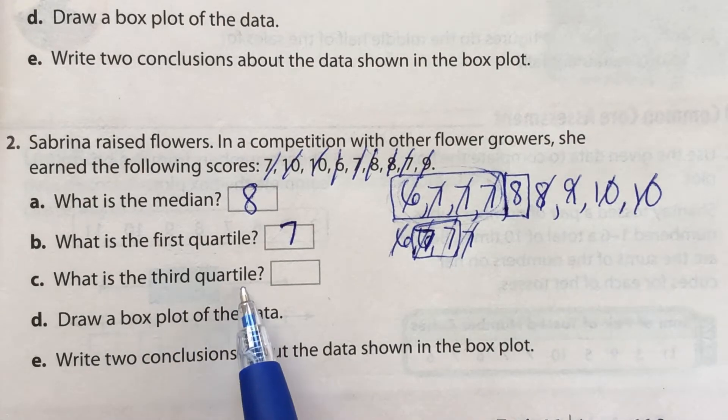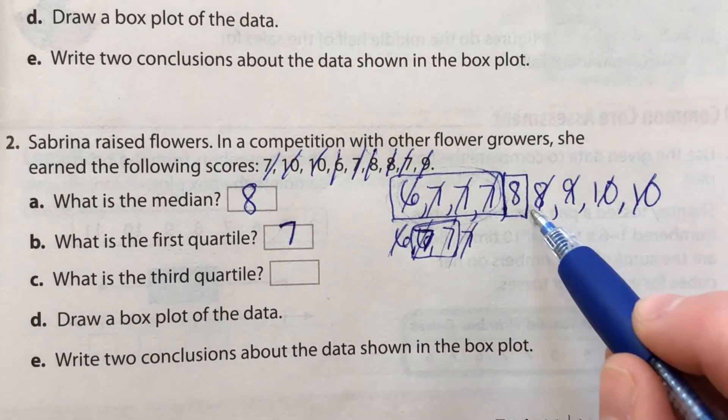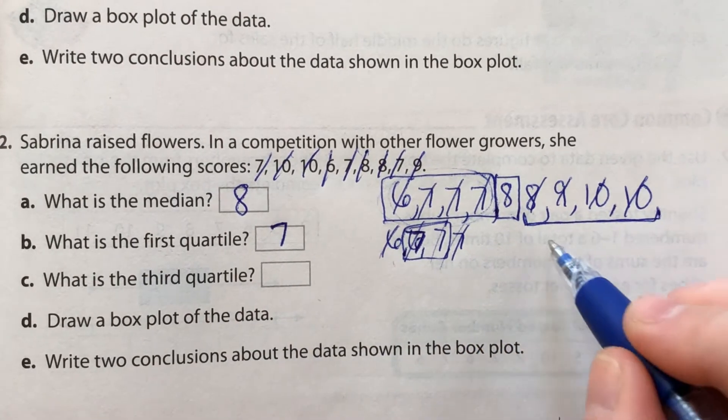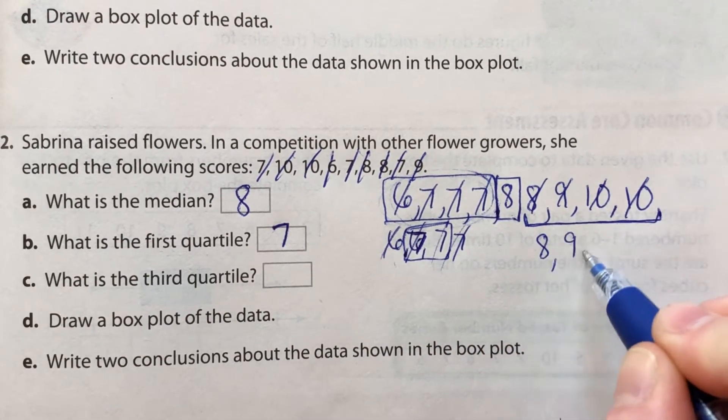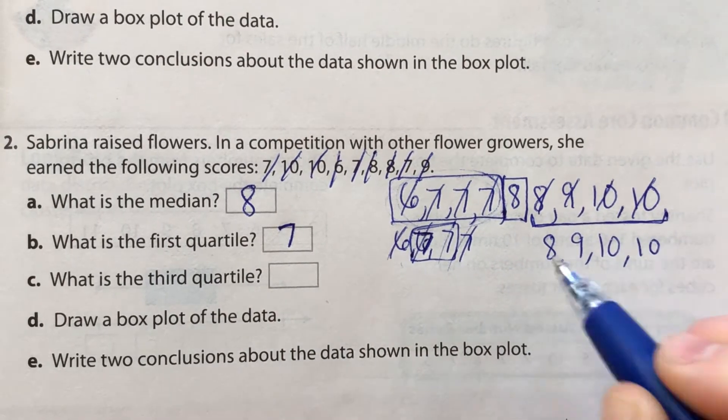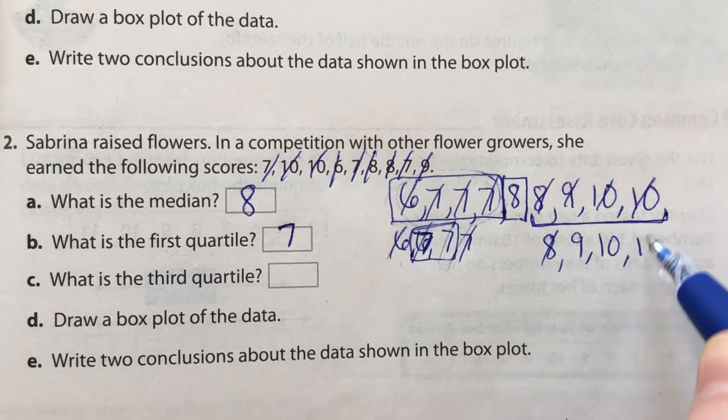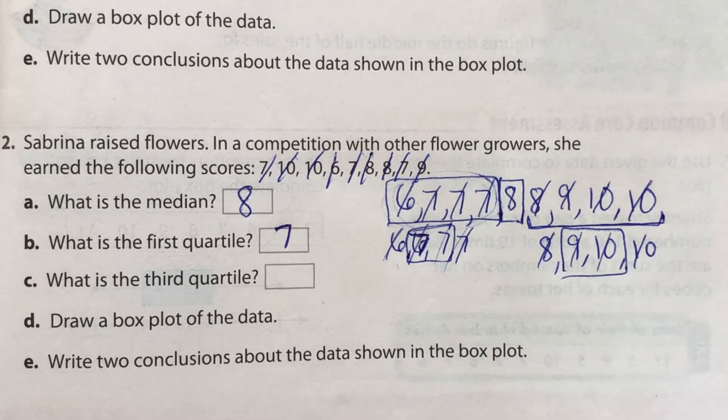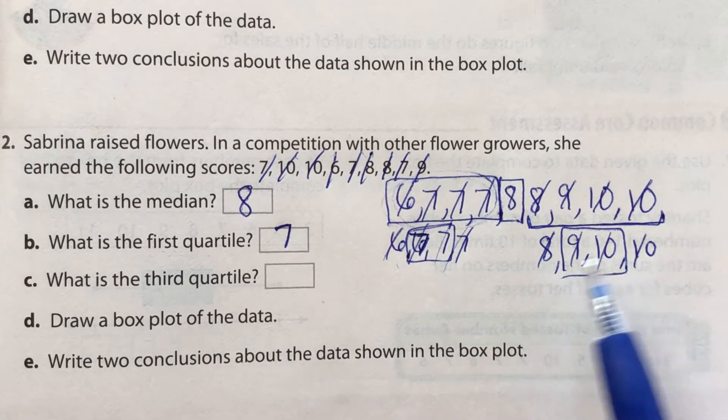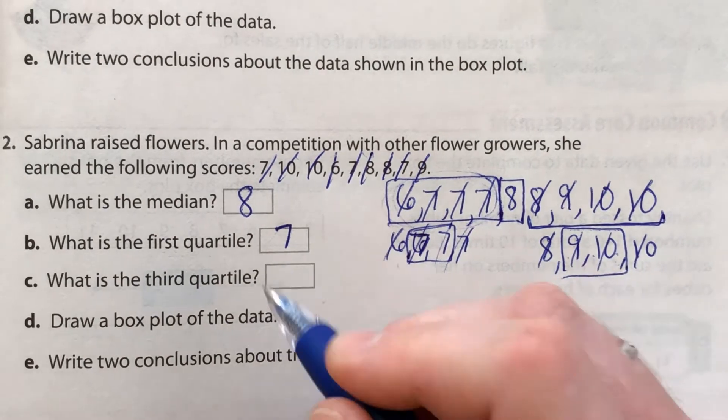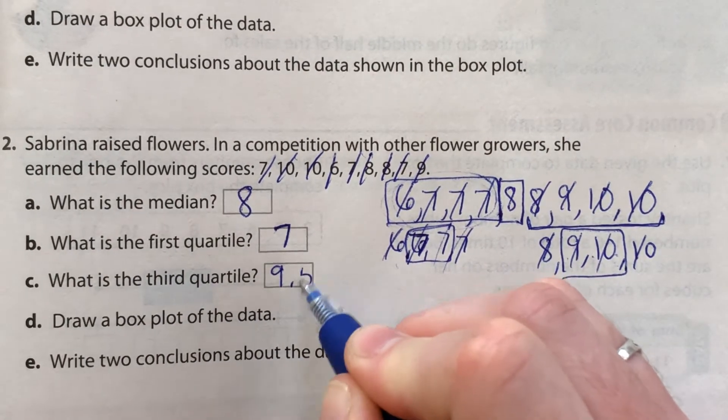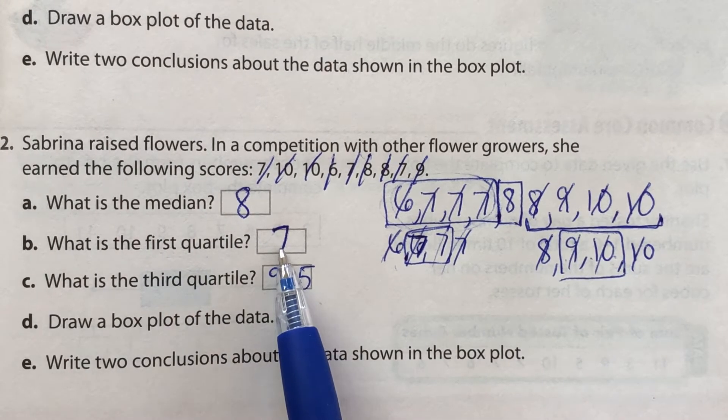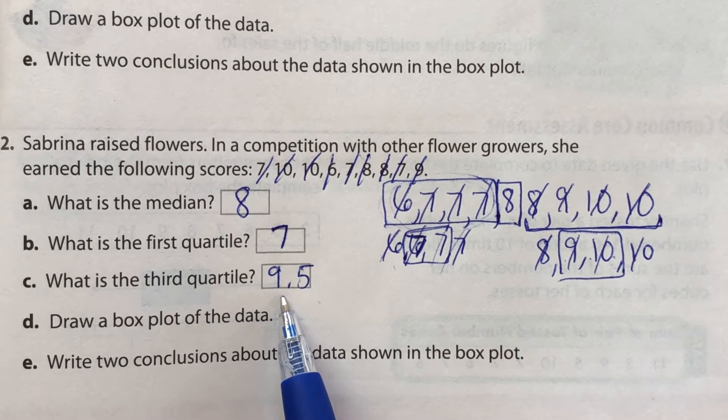The third quartile is the median of our second half of data right here. So I'm going to rewrite that out. So that will be eight, nine, 10, 10. And we find the median: one, one, two, two. We have two numbers that are in the middle. So we average them. Right in the middle of nine and 10 is nine and a half. So we found that our median is eight, our first quartile is seven, our third quartile is nine and a half.